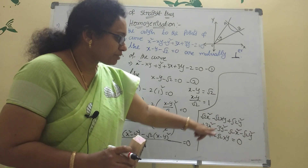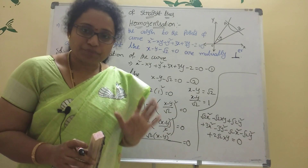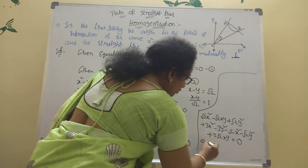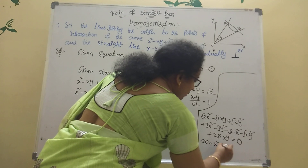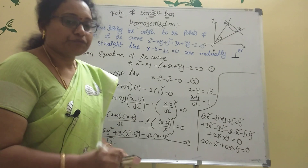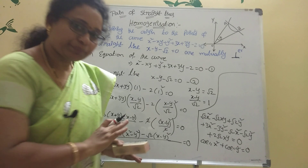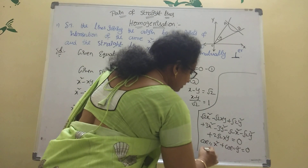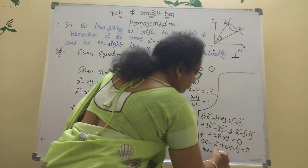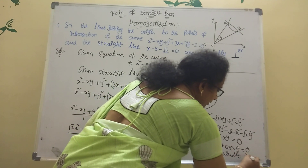The general equation is ax squared plus 2hxy plus by squared plus 2gx plus 2fy plus c equal to 0. That pair of straight lines is generally written as S equals 0. The condition for mutually perpendicular: coefficient of x squared plus coefficient of y squared equal to zero. If that sum equals zero, then the lines are mutually perpendicular.